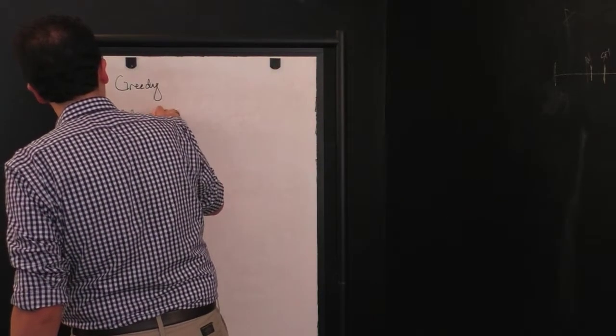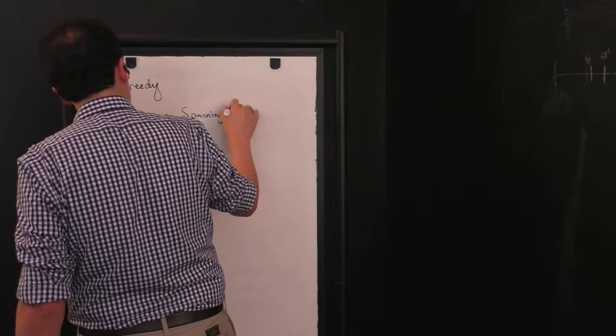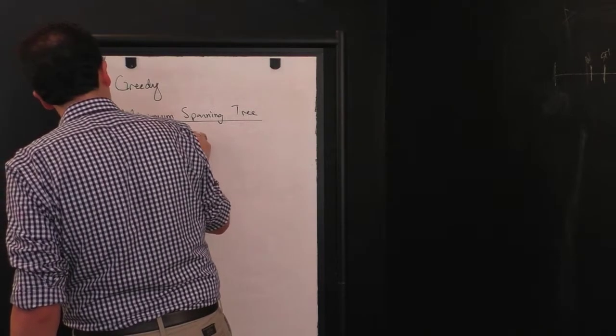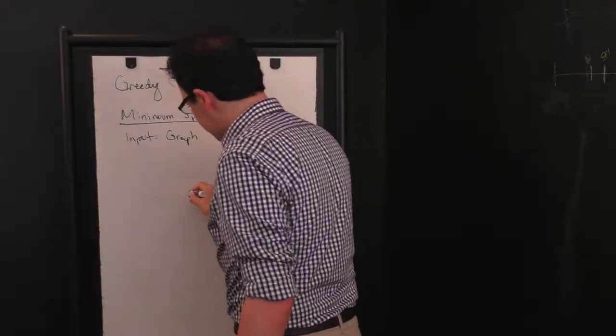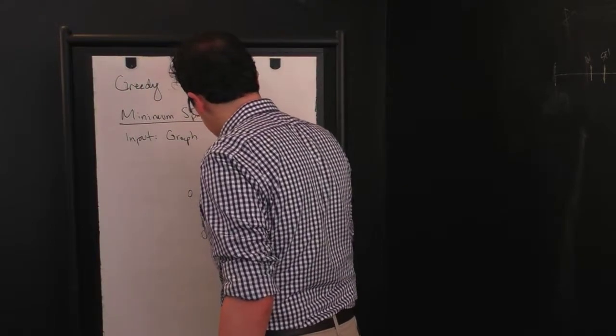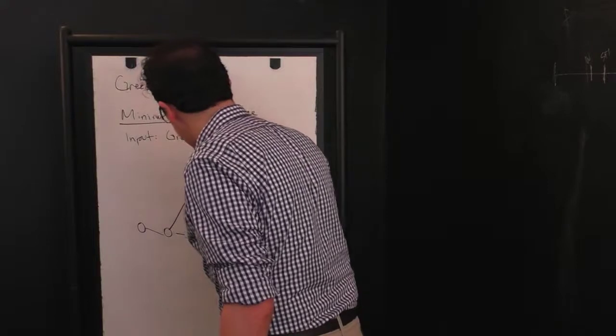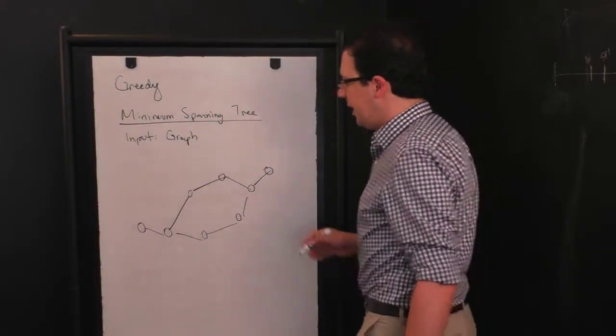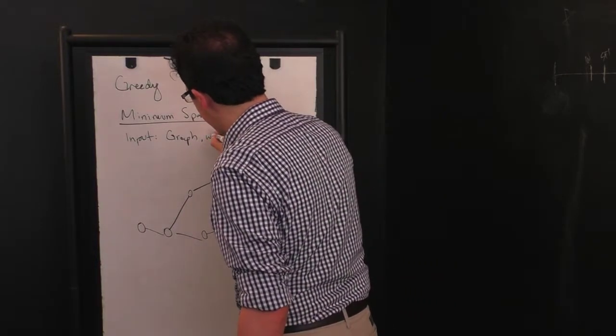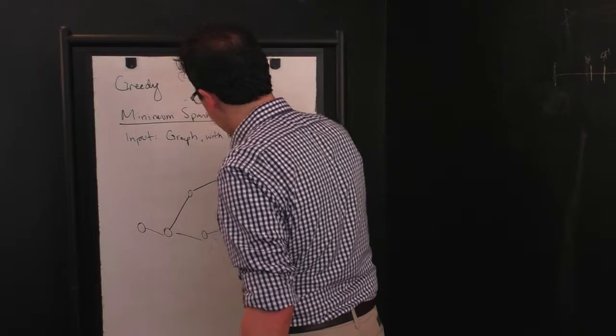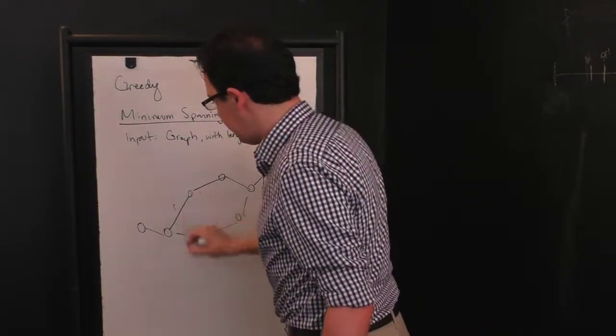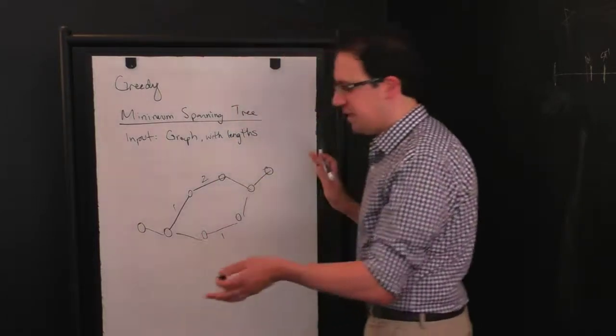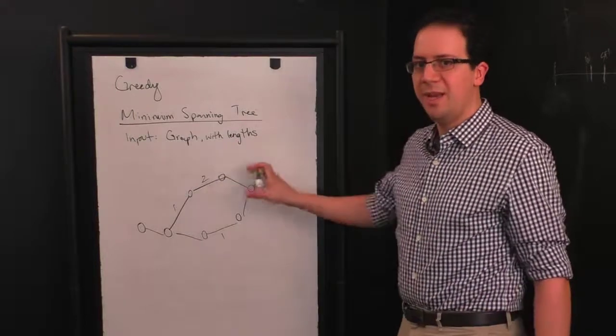The problem we're going to look at here is called the minimum spanning tree. The input is going to be a graph with some vertices like this that are connected by some edges, something like that. And it will have lengths on the edges. So maybe this edge is length one, this edge is length two, one, and for simplicity let's just say everything else is one, but the point is they can have different weights.